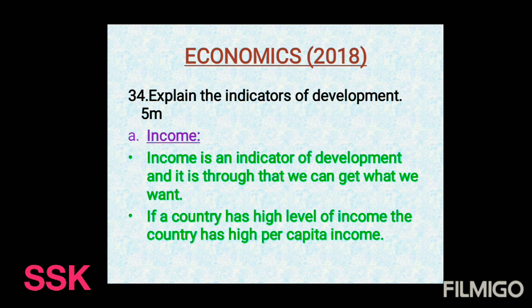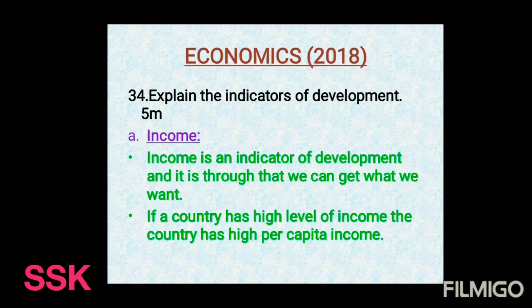Last question, number 34, which carries 5 marks: Explain the indicators of development. Development means quantitative plus qualitative change. Indicator number 1 is income. Income is an indicator of development — it enables us to fulfill our needs and desires. If a country has a high per capita income, it reflects a higher standard of living.